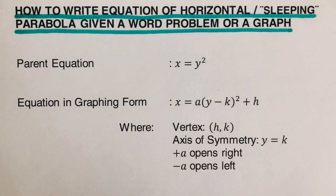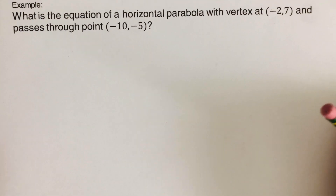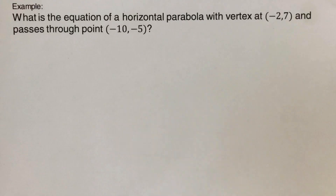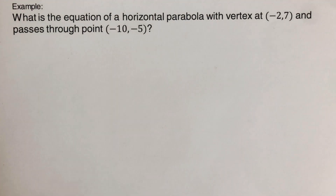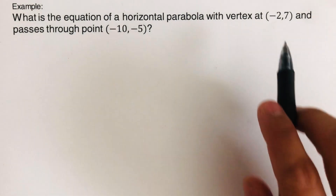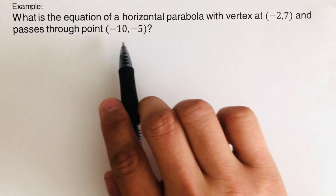Now let's move on to the first example: What is the equation of a horizontal parabola with a vertex at negative 2, 7 and passes through point negative 10, negative 5? There are two steps we need to follow in order to determine the equation of a horizontal parabola given the vertex and a point.